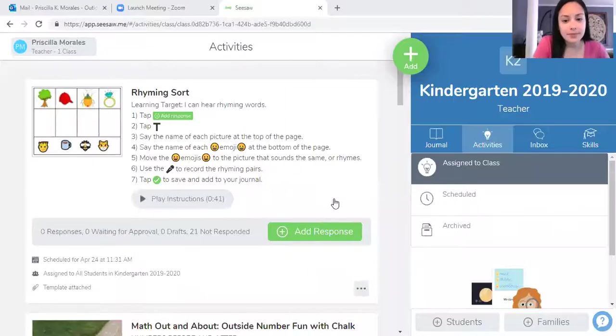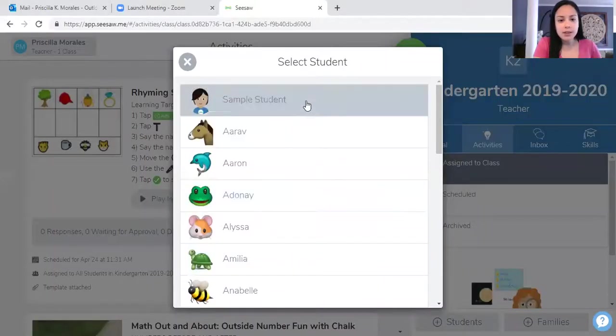This activity is going to be on Seesaw, and this is a rhyming activity. Let me pull that up. All right, so let me share the screen. All right, so you're going to find this activity called Rhyming Sort. Add your response.